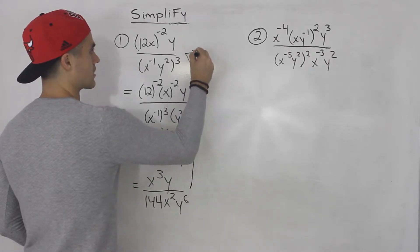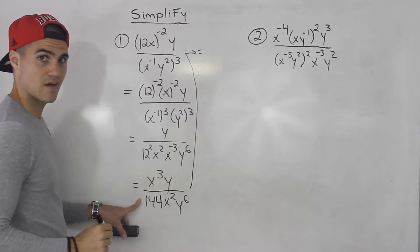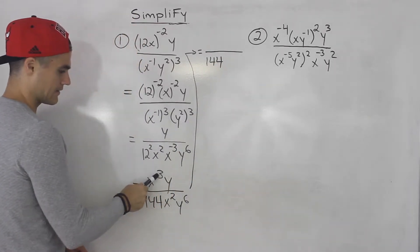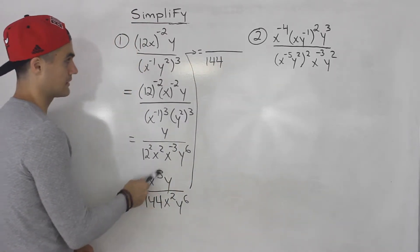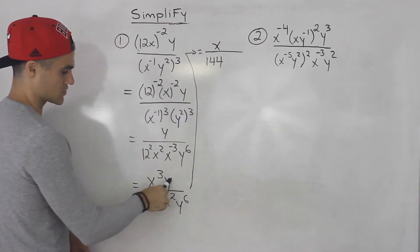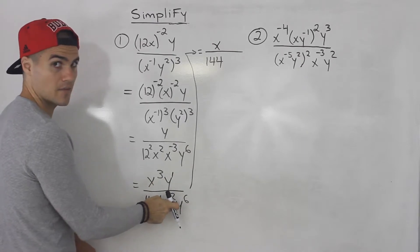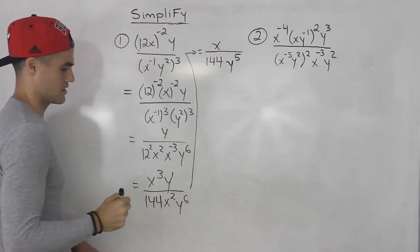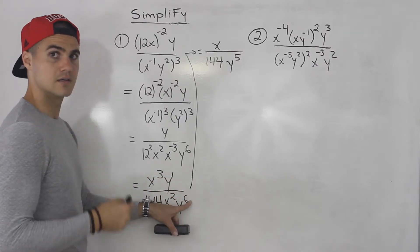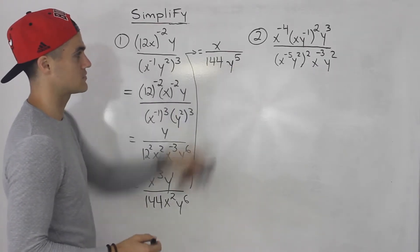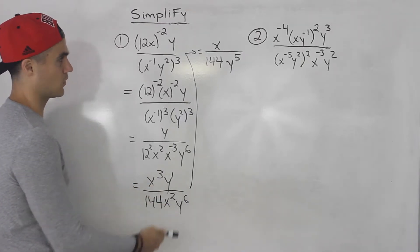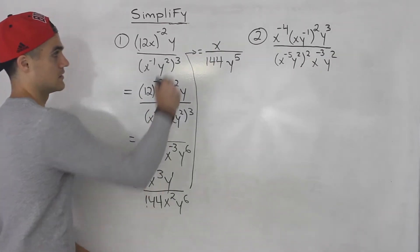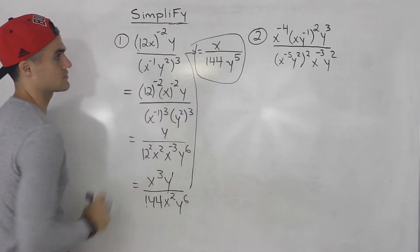What is this going to simplify to? Well, nothing can simplify with the 144, so that will definitely still be there. There are three x's up top and two x's on the bottom, meaning there's going to be one x left up top. There's one y at the top and six y's on the bottom, meaning there's going to be five y's left — one minus six gives us y to the negative five, which brings down to the denominator. And three minus two is one, so x to the power of one stays up top. 144 can't simplify further — so that is your final answer to number one.